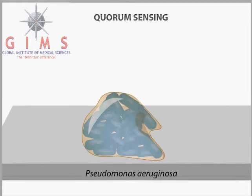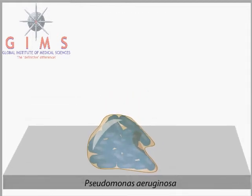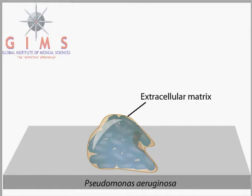Quorum sensing may influence the amount of extracellular matrix produced by the cells. This thick, slimy material consists of polysaccharide polymers called exopolysaccharides and entrapped organic and inorganic materials. The extracellular matrix protects the cells from damage from environmental assaults.